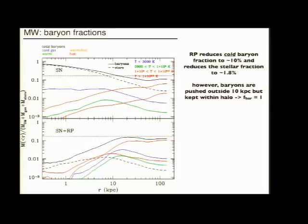If we look at the baryon fraction profiles, this is the amount of mass in each component. We see that within the galaxy they're very different, but the most important quantity is here at the virial radius. The baryon fraction is actually higher in the model with radiation pressure, although if you look at only the cold baryons, radiation pressure is able to reduce the baryon fraction to about 10% and the stellar fraction to only 1.8%. However, these baryons are still there. They're not pushed outside the halo, they're just hot.